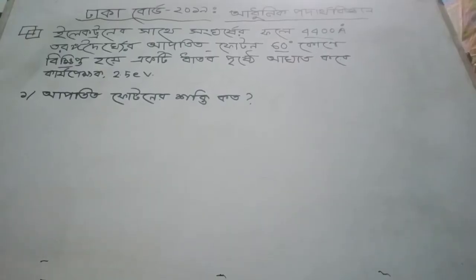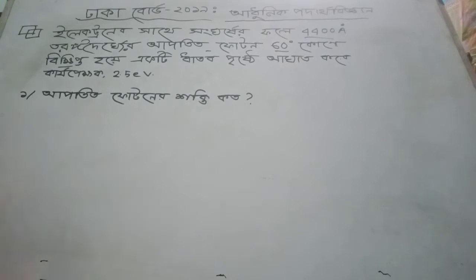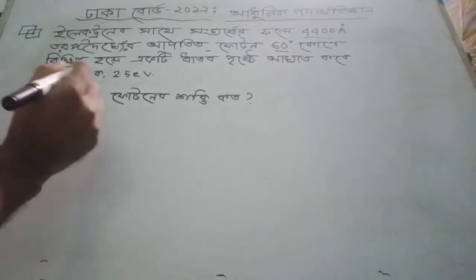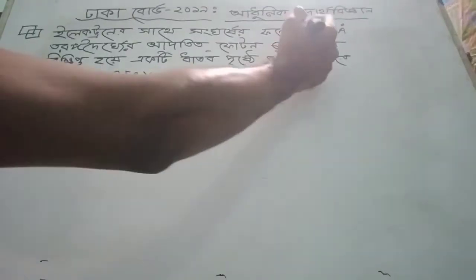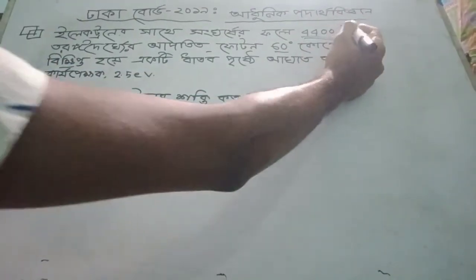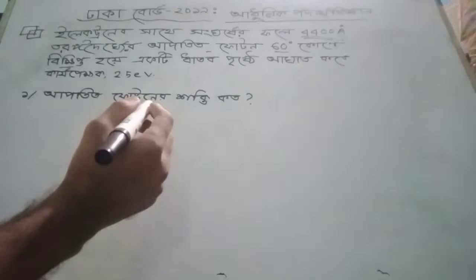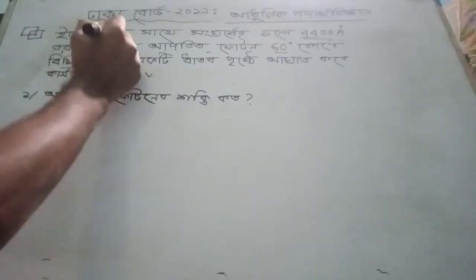Assalamu alaikum. In HSC Physics second paper, Dhaka board questions on modern physics: an incident photon of a certain wavelength — the active photon is incident, that is, the photon of this wavelength first...